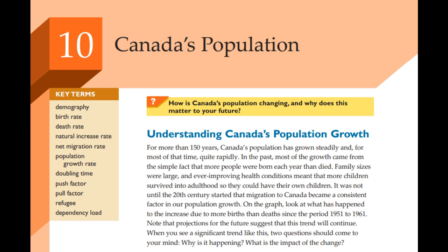The chapter digs into a really cool concept: doubling time and the rule of 70. The rule of 70 is a handy way to estimate how long it takes for a population to double. Basically, you divide 70 by the population's growth rate and you get a rough idea of the doubling time. So if a country has a 2 percent growth rate, it would take about 35 years for their population to double.